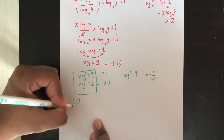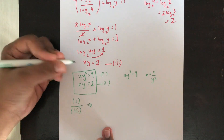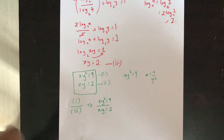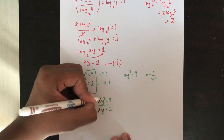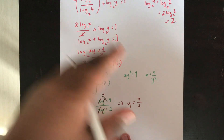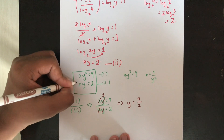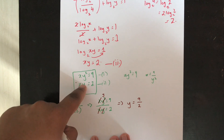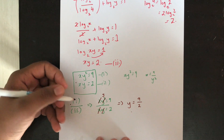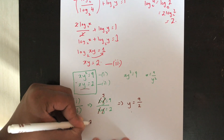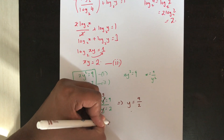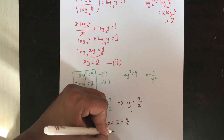Dividing equation 1 by equation 2: (x · y²) / (x · y) = 9 / 2. The x cancels and y² divided by y leaves y, so y equals 9 over 2. This division method only works for equations of this product form. Now substituting y = 9/2 into equation 2: x times 9/2 equals 2, therefore x equals 2 divided by 9/2, which equals 4 over 9.